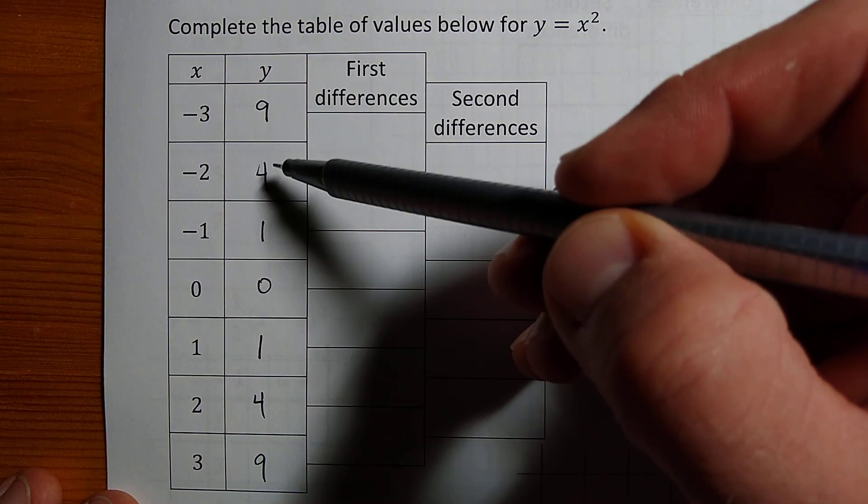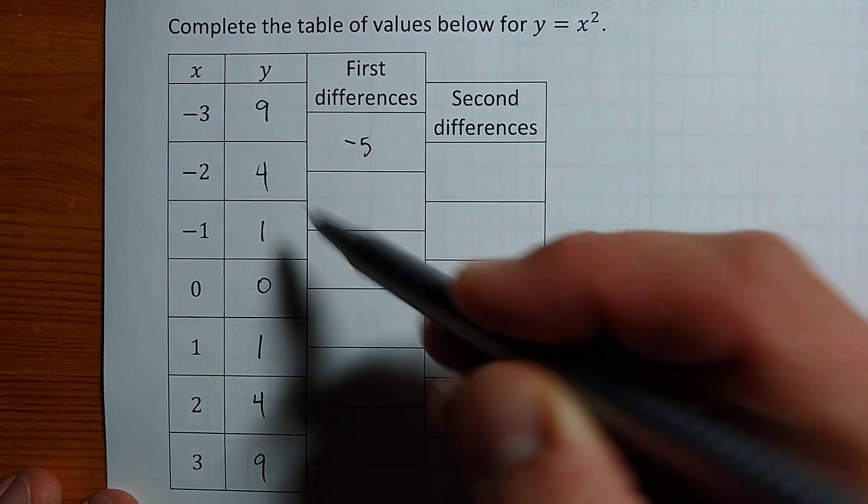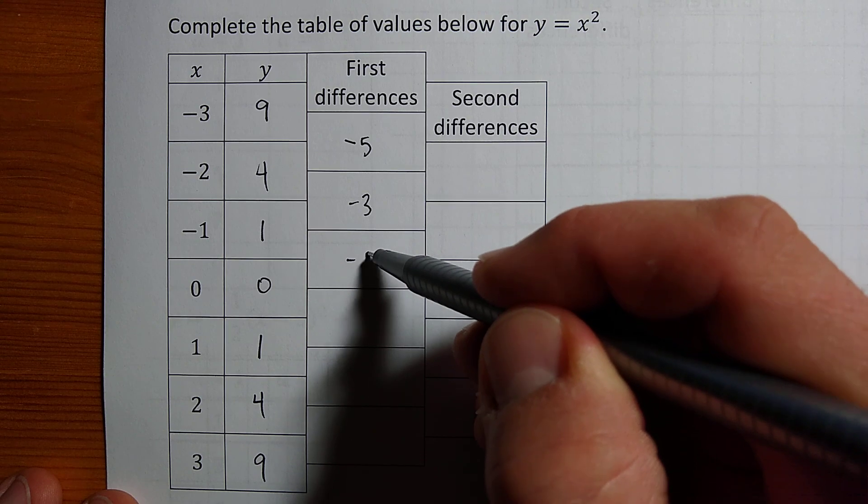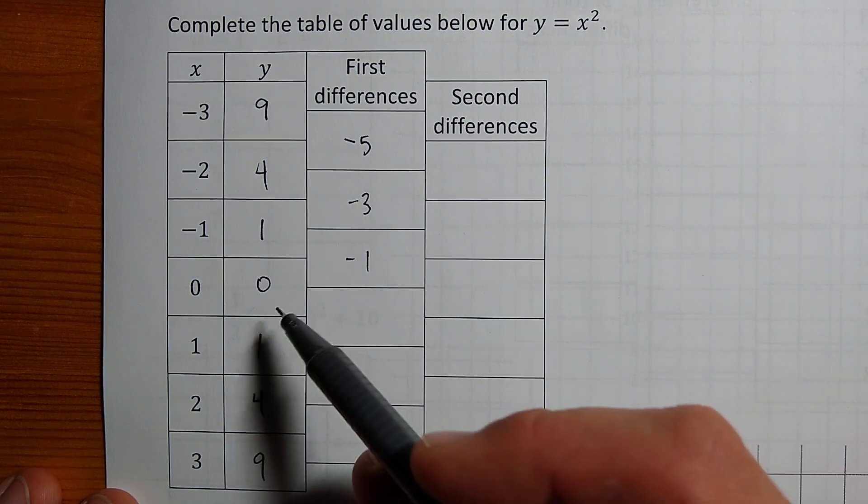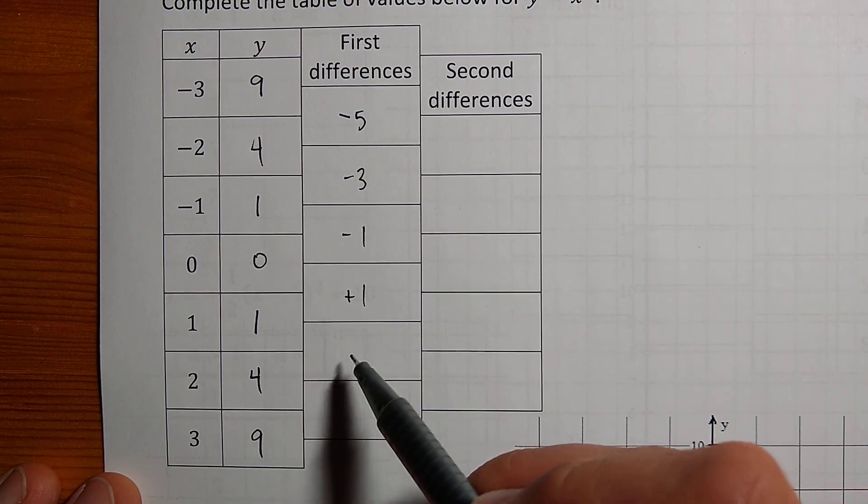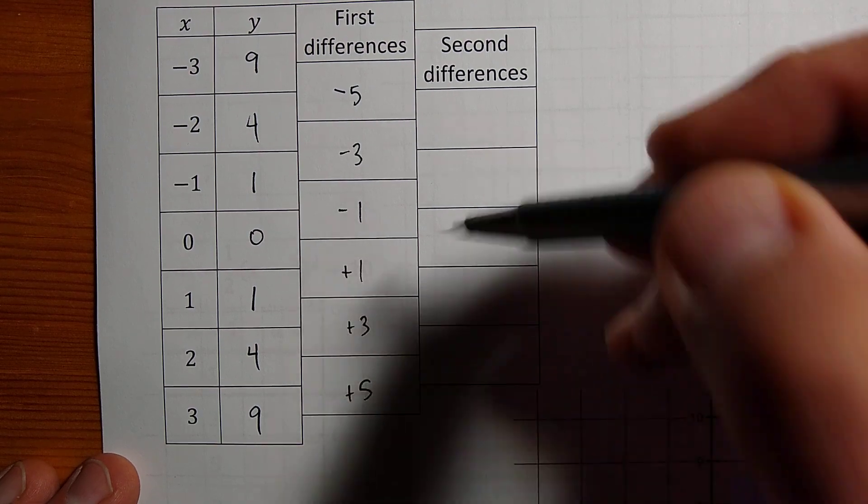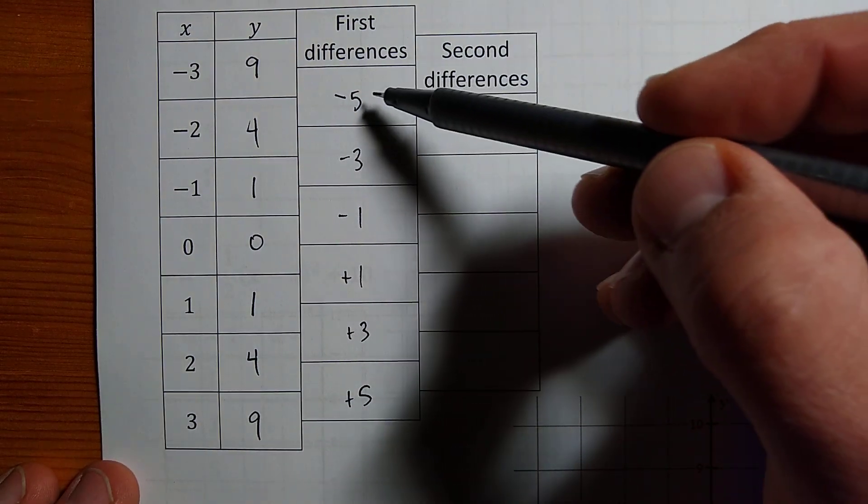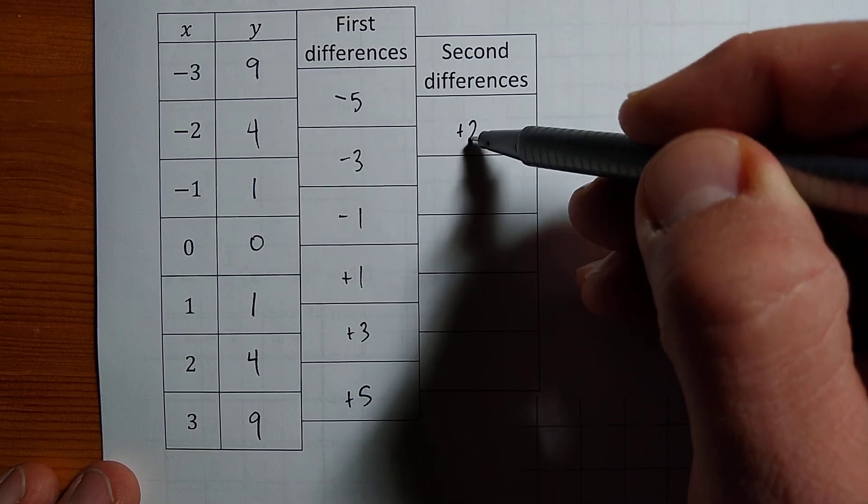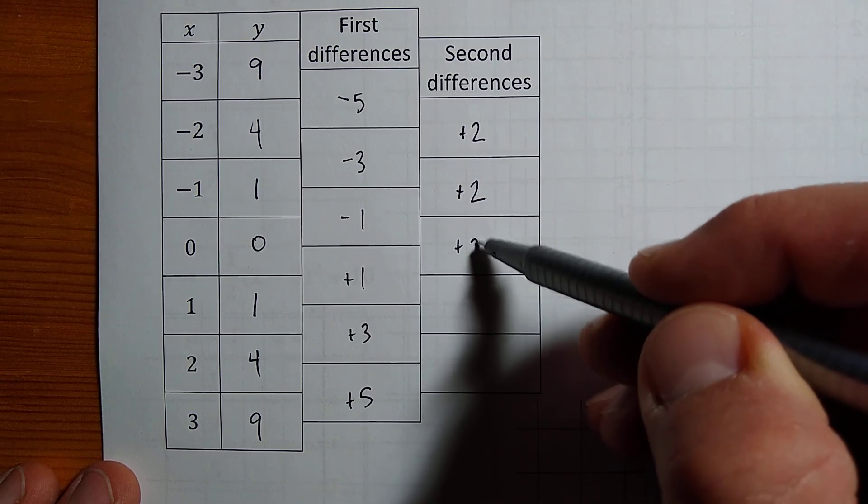For first differences, we subtract. How do we get from 9 to 4? That's minus 5. To get from 4 to 1, down by 3. From 1 to 0, down 1. From 0 to 1 is up 1. From 1 to 4 is plus 3, and from 4 to 9 is plus 5. The second differences are all positive. From negative 5 to negative 3 is plus 2, and all of the second differences will be the same. They're all positive 2.